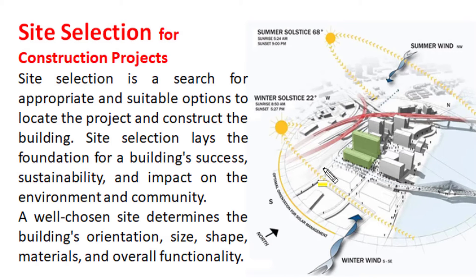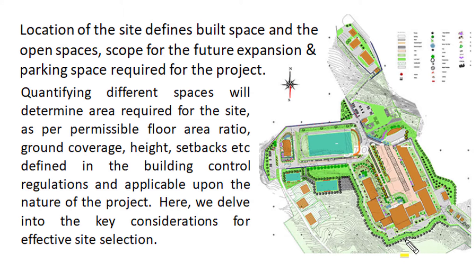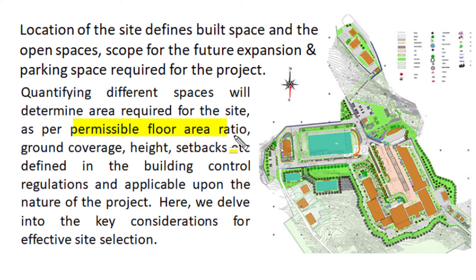A well-chosen site determines the building orientation, physical size, shape, material and overall functionality. The location of a site defines built space, open space, the scope for future expansion, and parking space required for the project. Quantifying these will determine the area required. This area calculation depends upon permissible FAR (floor area ratio), ground coverage, height, and setbacks, which are defined in building bylaws or building control regulations applicable to the nature of the proposed project.